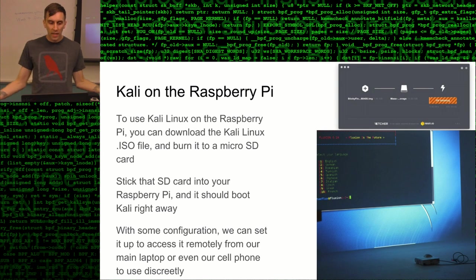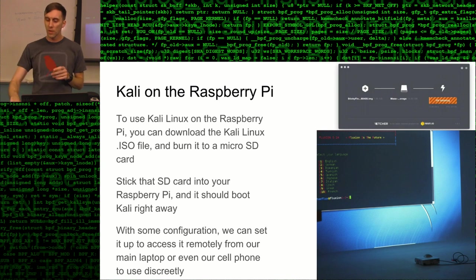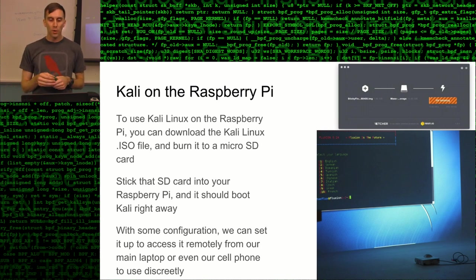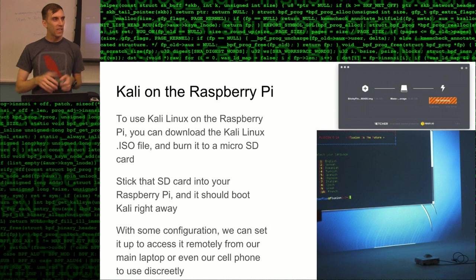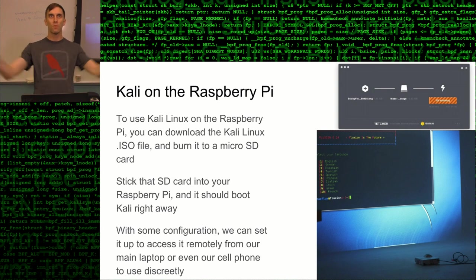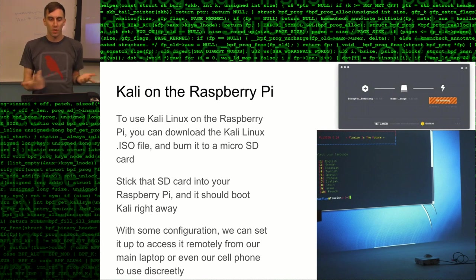Setting this up is really easy. There's a program called Etcher that writes the image file for the operating system directly to the SD card. You take the ISO file from the Kali Linux website, use Etcher to burn it to a micro SD card, pop it in, plug it in, and that's it. I have a Raspberry Pi Model 3 plugged into a projector with a little keyboard — making it fill the entire room based on this tiny little computer, surrounded by Kali Linux in minutes.